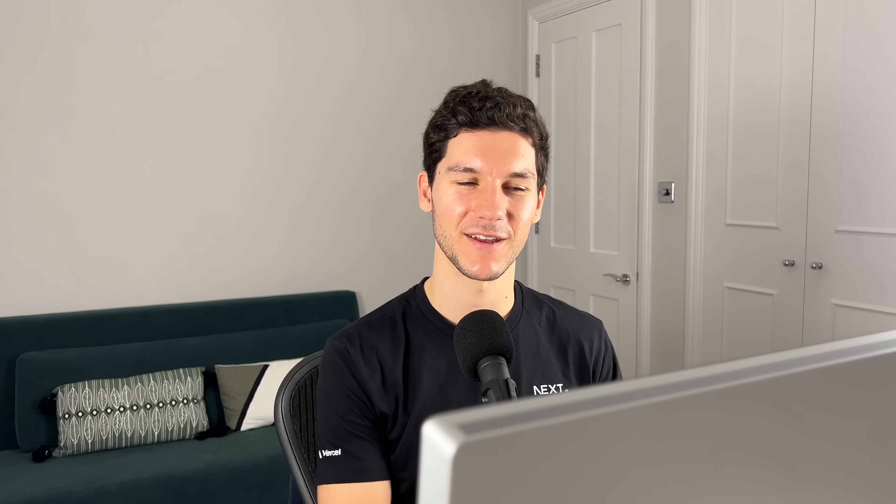But what if we wanted to go beyond text? With Next.js 14 and the AI SDK RSC library, we can stream React components directly from the server. Let's build an application incorporating everything we've learned: a chatbot with streaming, access to a tool, and the ability to stream React server components. Because this application is a bit more complex, we'll cover everything at a higher level. We'll be using server actions instead of route handlers — server actions are just server-side functions you can call directly from the client.